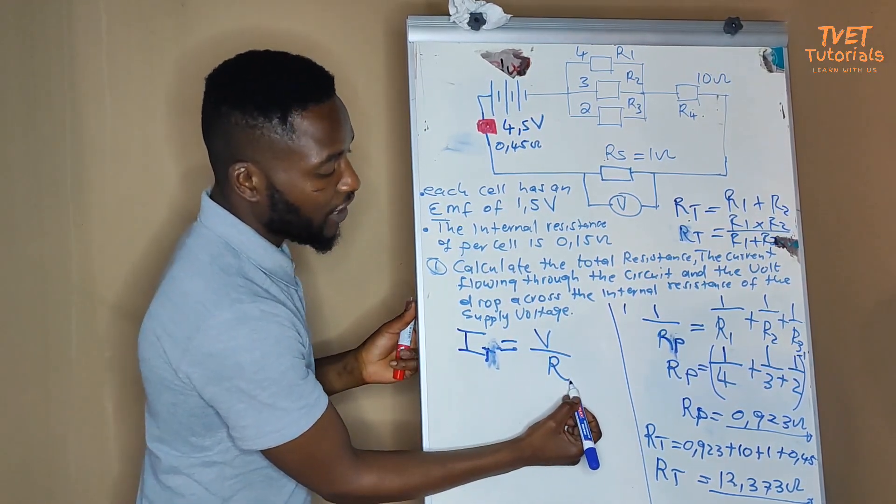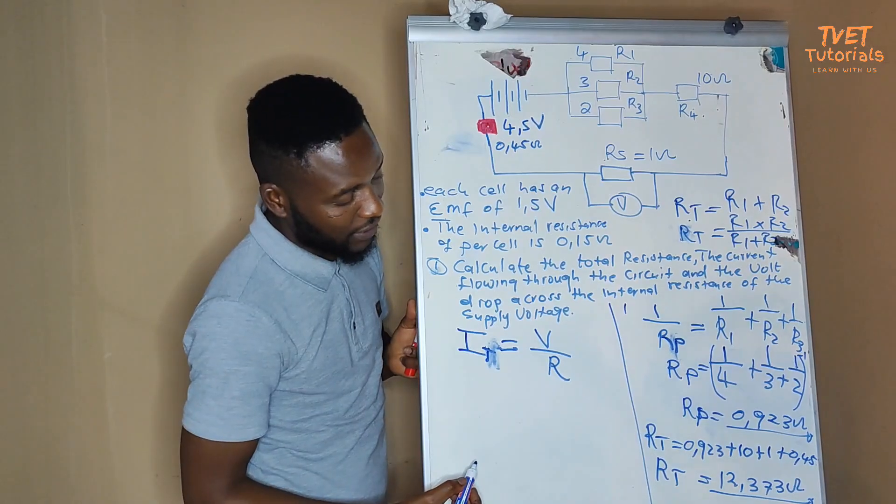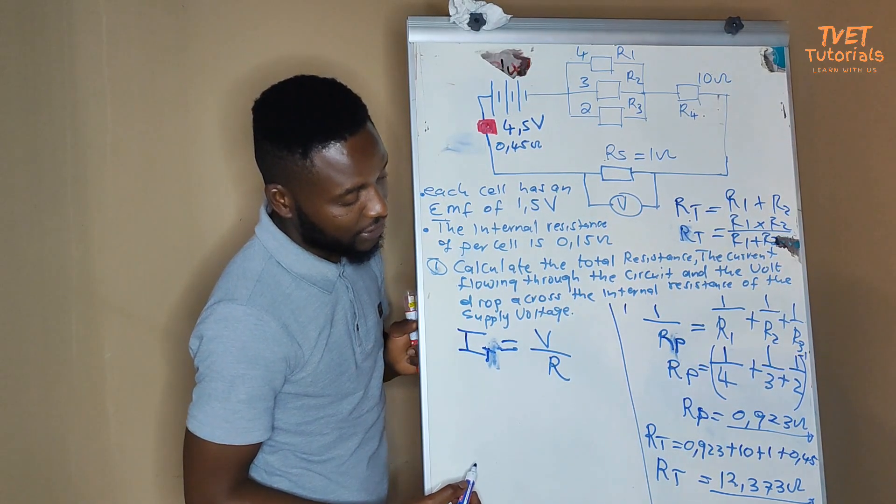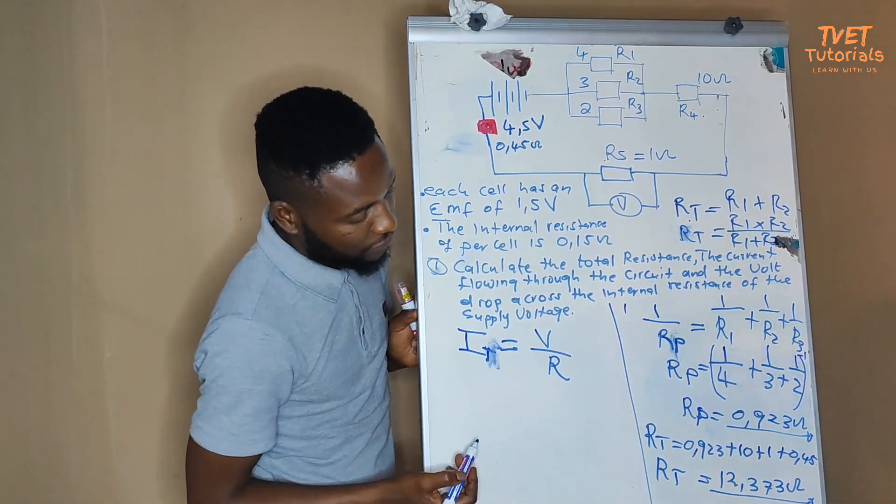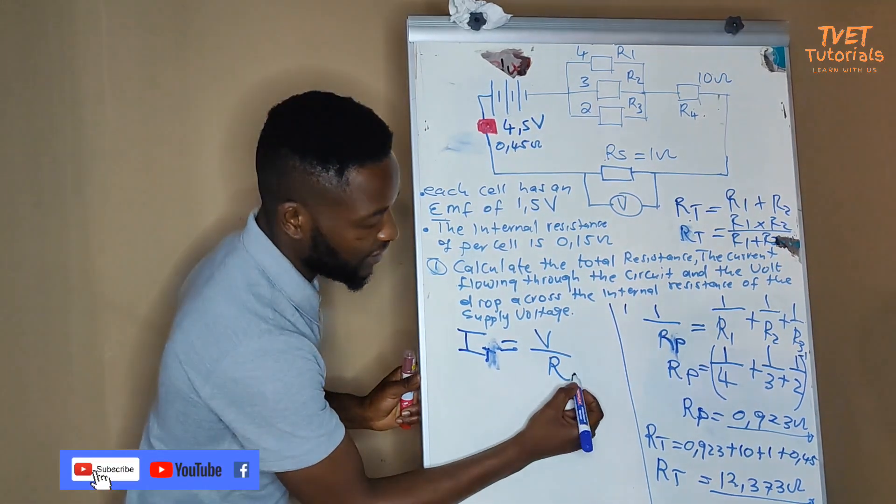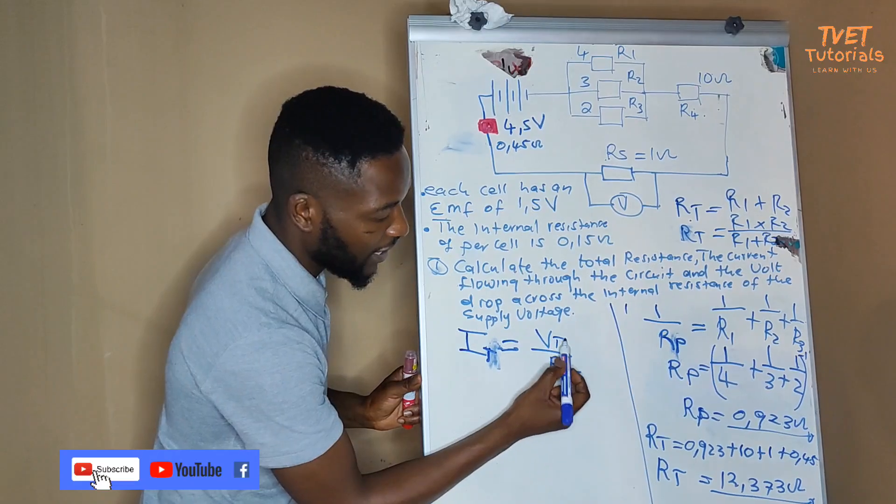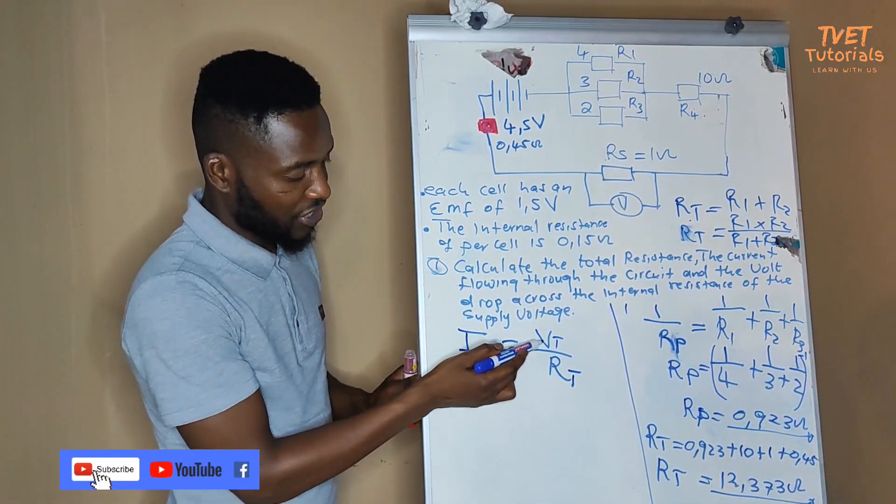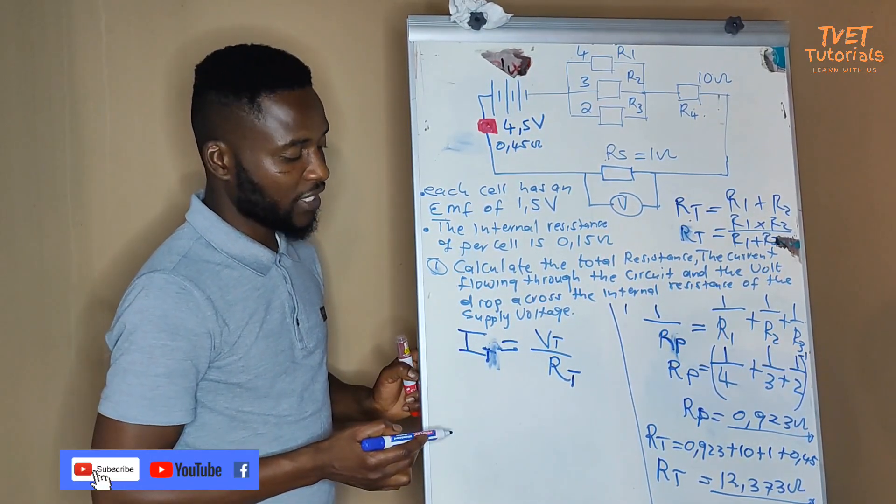Now, we also calculated the total resistance RT and we got 12.373. So, this is our RT, this is our VT, which is equal to the total EMF.